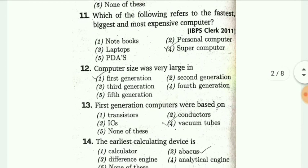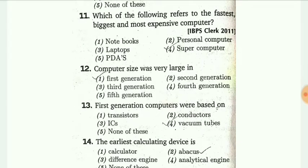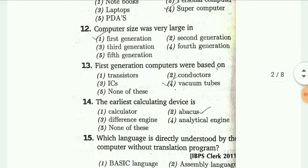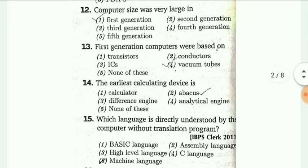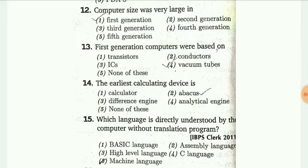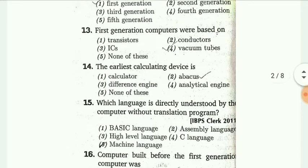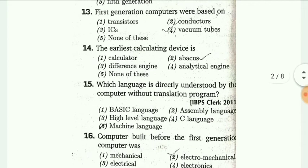Which of the following refers to the fastest, biggest and most expensive computer? The answer is supercomputer. Computer size was very large in first generation. Next, the first generation computer was based on dash. The answer is vacuum tubes.